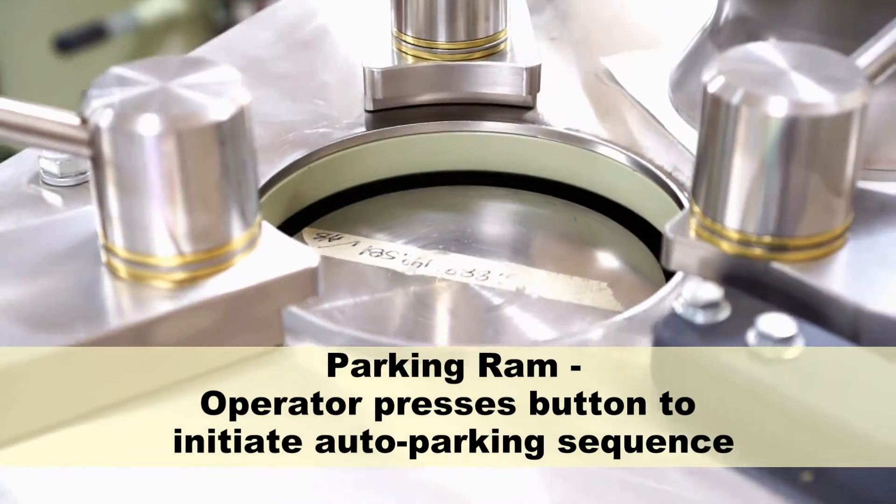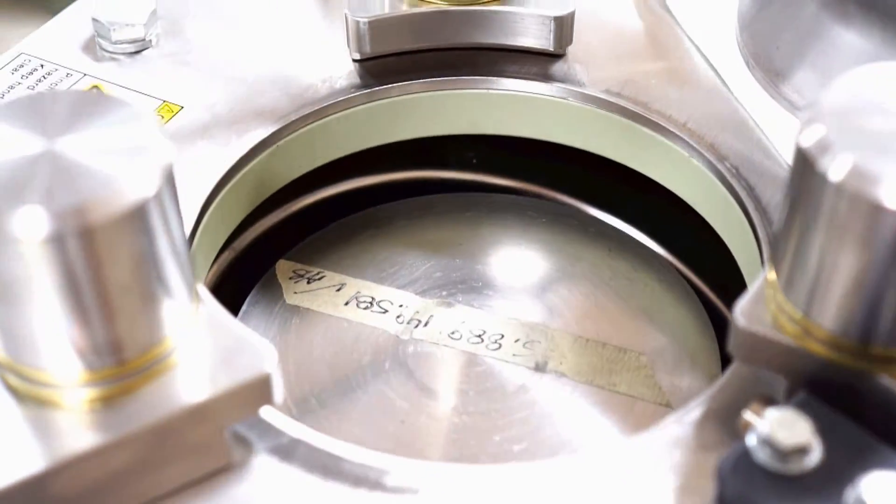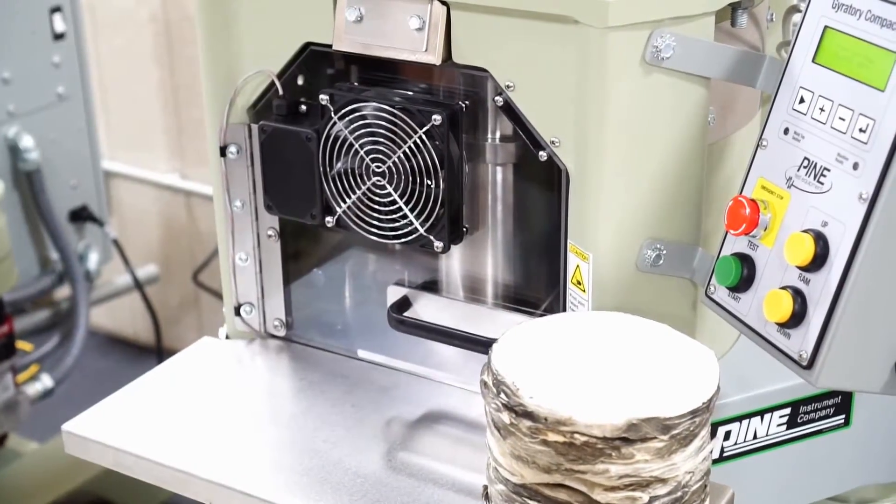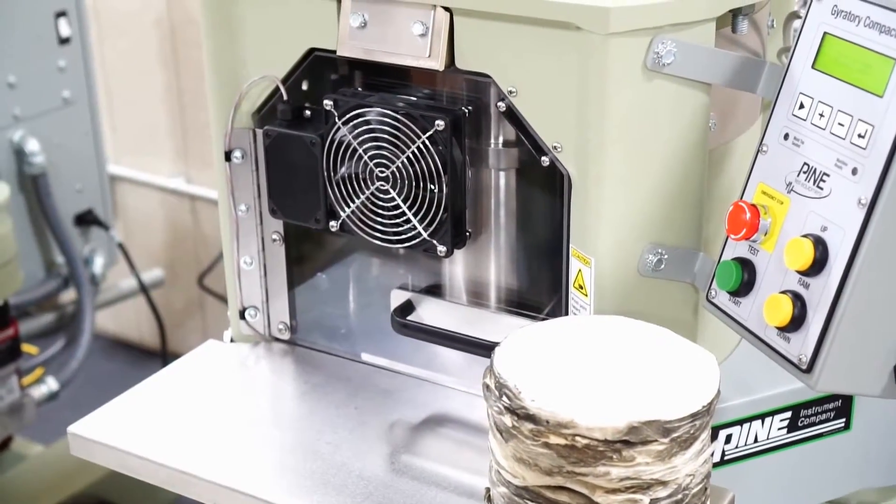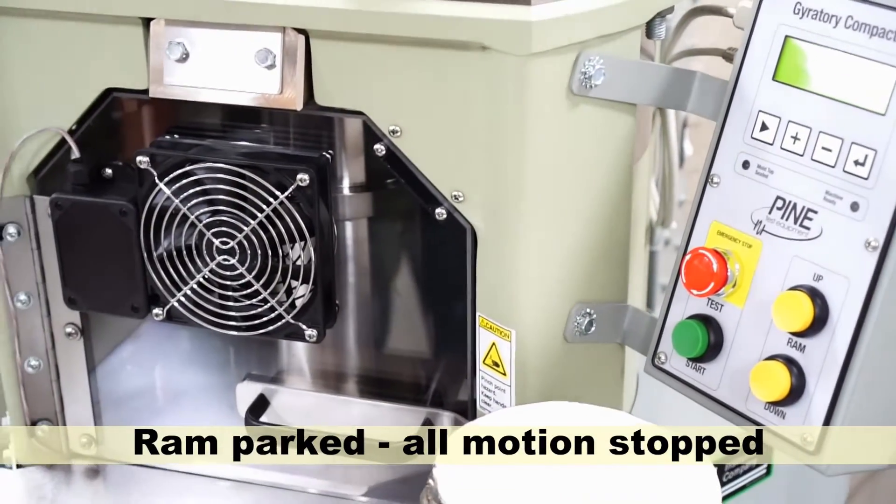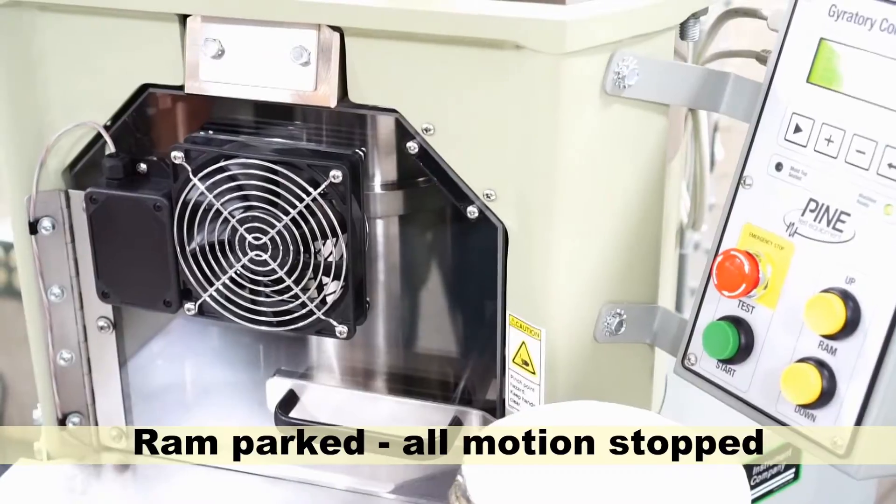The operator then presses either the start or the down button to return the ram to its start position. When the ram is parking, it may be stopped by pressing the e-stop button or by opening the door. When the ram has finished parking, all motion stops automatically.